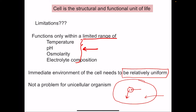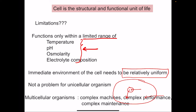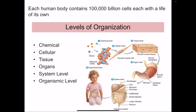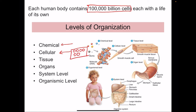For a multicellular organism, maintaining the internal environment becomes a problem because multicellular organisms are complex machines that perform complex actions and require complex maintenance. Each human body consists of about 100 billion cells, each functioning at its own level with its own life. These cells are arranged in a particular manner, with chemical processes going on inside each cell and the entire machinery for keeping it alive.